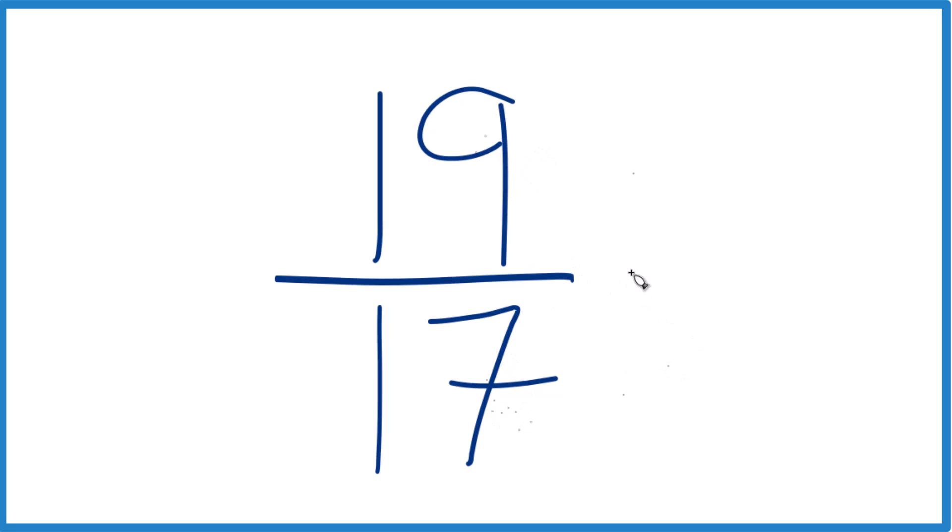The thing is, the only common factor, the only number that goes into 19 and 17 evenly, is 1. And if you divide 19 by 1 and 17 by 1, you'll get 19/17.